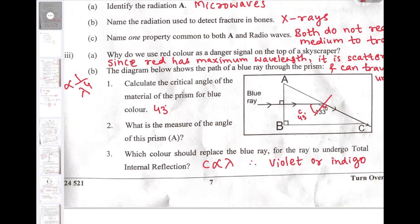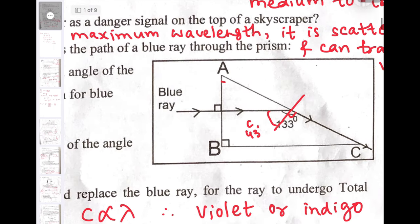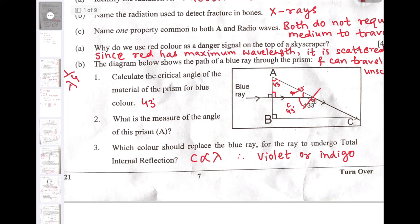What is the measure of the angle of the prism A? To find out the angle of the prism A, we can use a little bit of maths here. This angle is 90, let us find out this angle, that is 90 minus 43. So this angle has to be 43 degree. So prism angle is also 43.